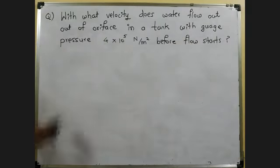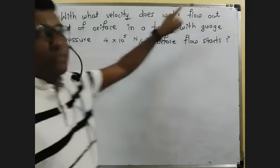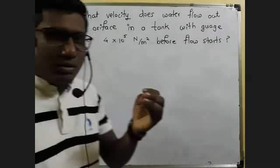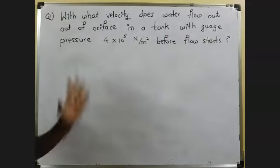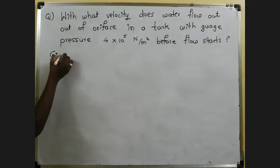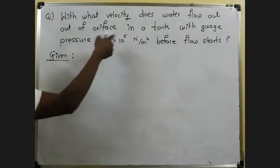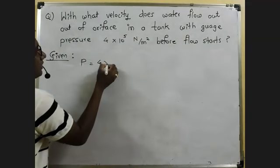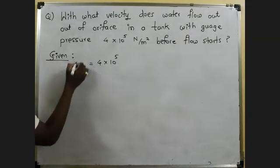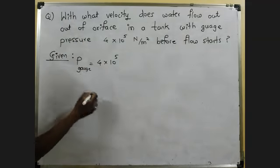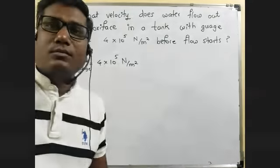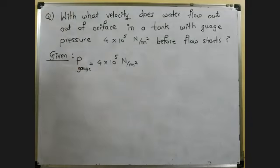So this is the question in front of you: with what velocity does water flow out of the orifice, a very small hole in the tank with gauge pressure? First of all I would like to write the given things. Given gauge pressure P is 4 into 10 power 5. With what velocity water flows out, which means speed of efflux.